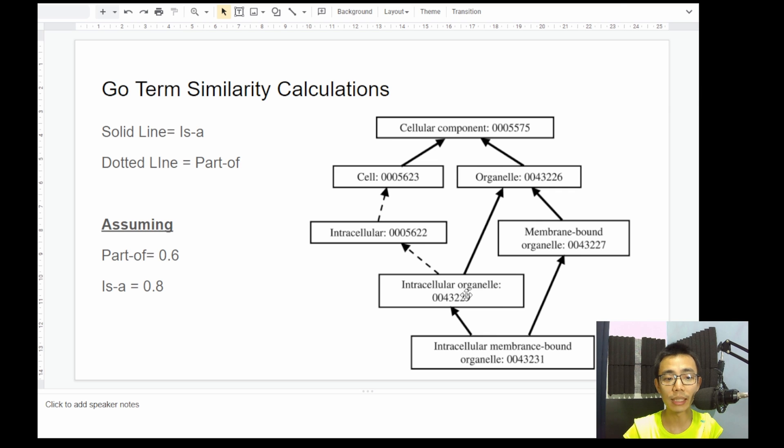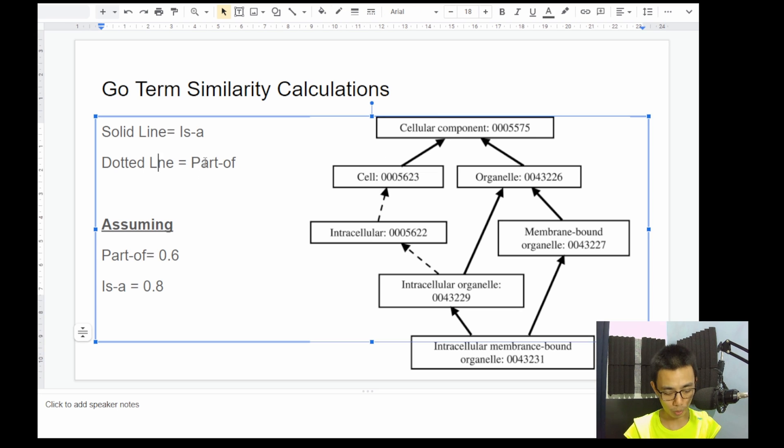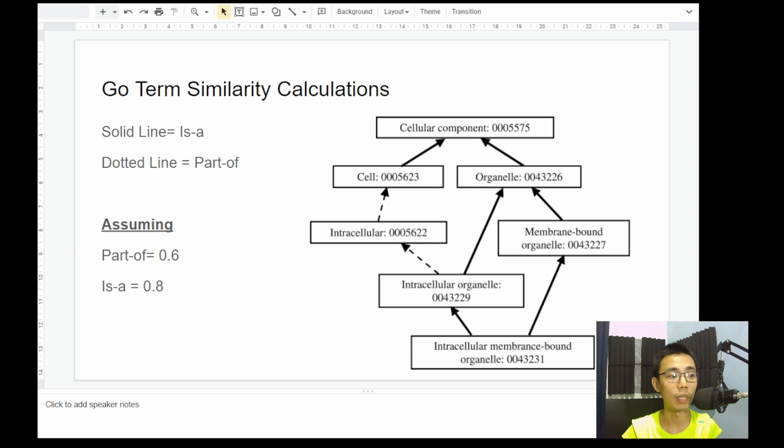So in this case, the intracellular organelle is part-of an intracellular but is-a organelle, while intracellular is part-of the cell and the cell is-a cellular component and so on. So remember that part-of actually signify a weaker relationship and is-a signify a stronger relationship. So we're going to artificially set that to 0.6 and 0.8 just to help with our understanding. But this value is not always consistent. It's not always the same in all the calculations.